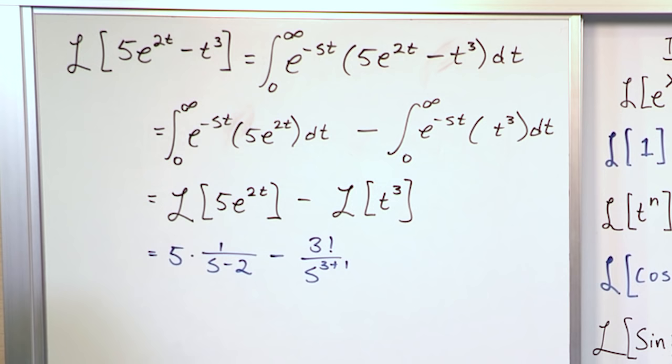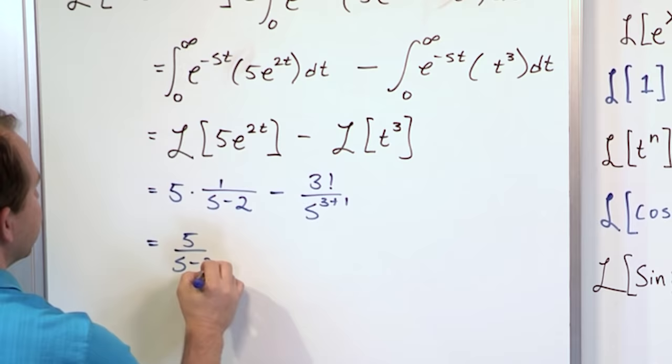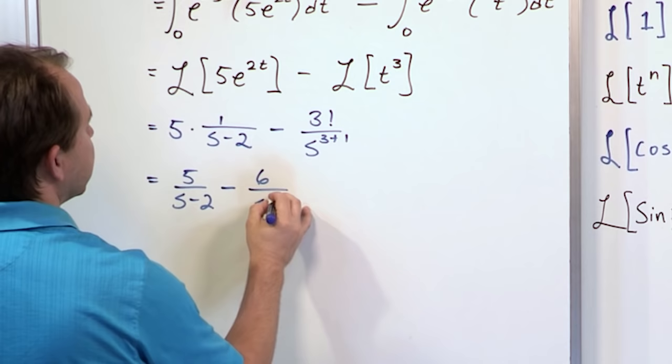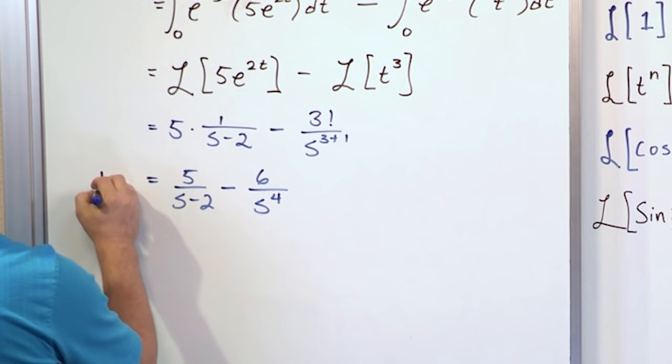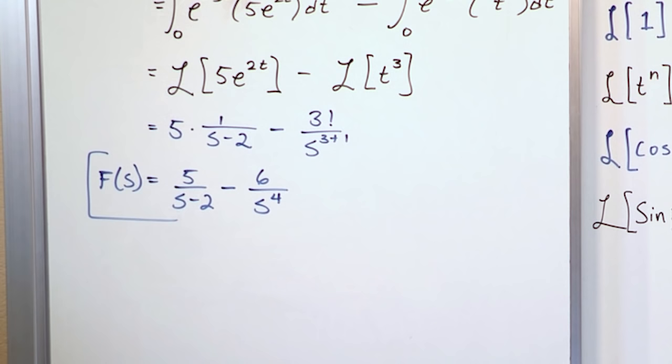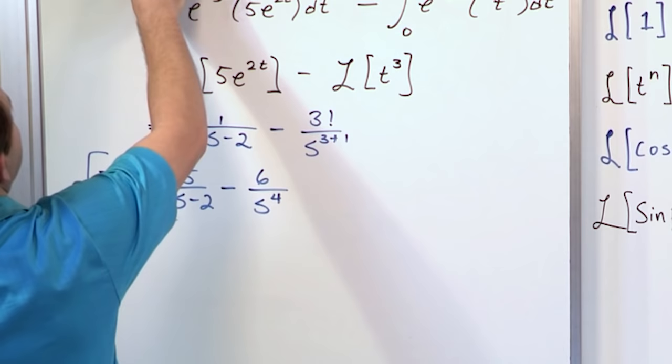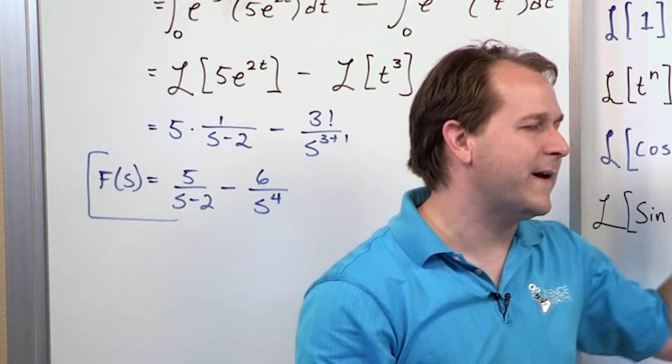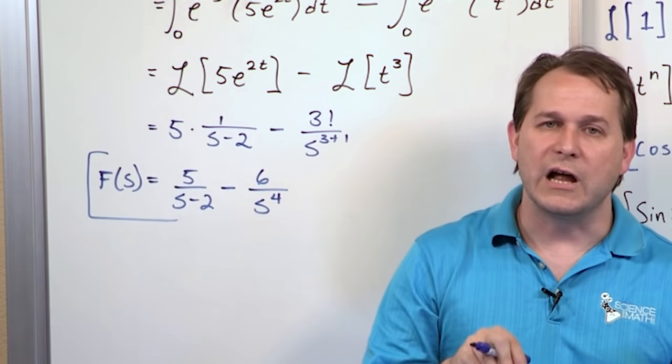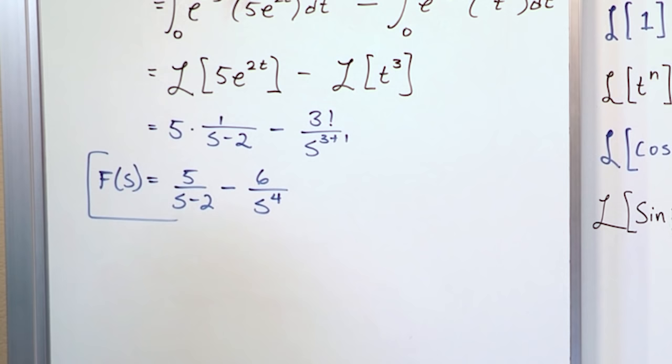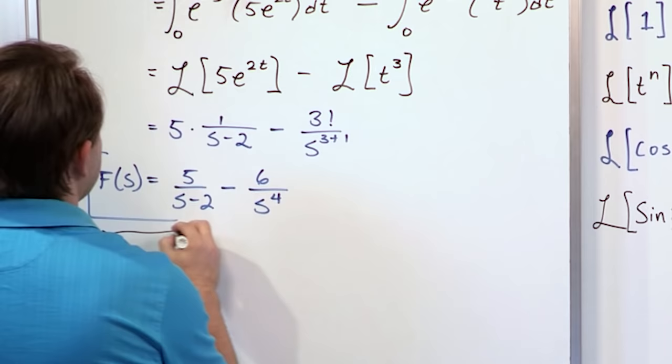That's the Laplace transform of e to the 2t. Then we subtract off and say, what's the Laplace transform of t cubed? So if we go here, we say it's going to be 3 factorial s to the n plus 1, which would be s to the 4th power. So 3 factorial over s to the 3 plus 1. I don't like to do too many things in one step, so I like to show everything. So what I have here is 5 over s minus 2 minus 3 times 2 is 6 times 1 is 6 over s to the 4th power. So I get 5 over s minus 2 minus 6 over s to the 4th. This is capital F of s because it's a function of s. Notice that what's happening every time we transform these guys is I go from a function of t to a pure function of s.